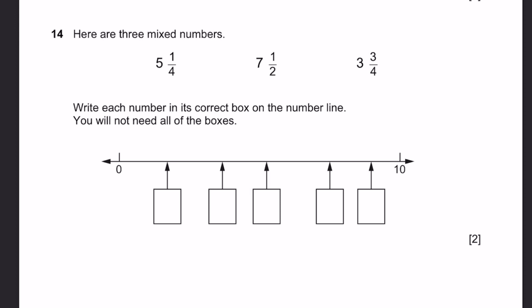Question 14. Here are three mixed numbers — write each in its correct box on the number line. Using a similar method to the previous question: 3 and 3 quarters comes here, 5 and 1 quarter over here, and 7 and a half over here.